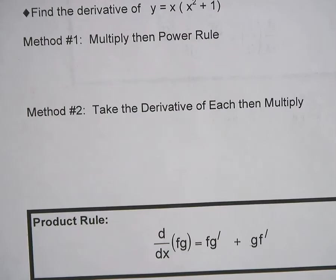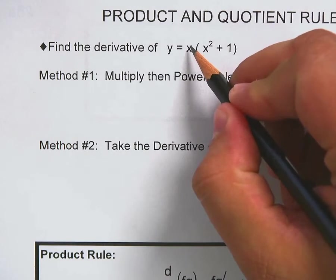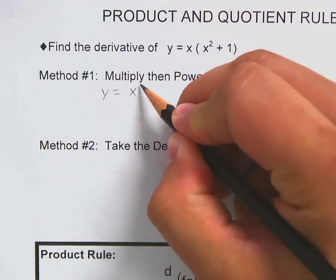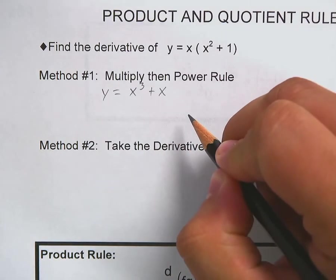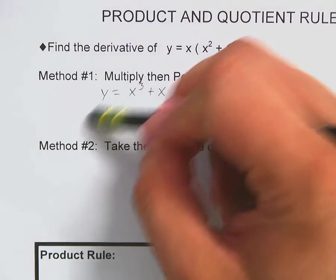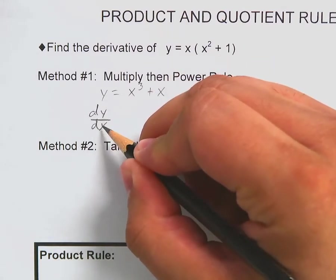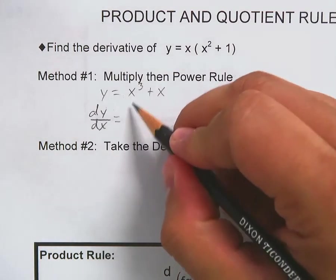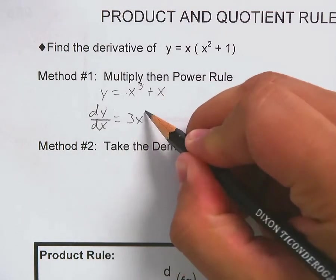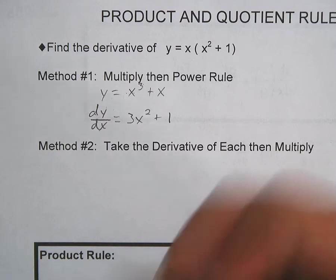The first example says find the derivative of y = x(x² + 1). There are two methods: you can multiply out and then use the power rule, which is what I'd recommend. Distributing gives y = x³ + x, and taking its derivative — y prime, also written as dy/dx, the derivative of y with respect to x — gives dy/dx = 3x² + 1.